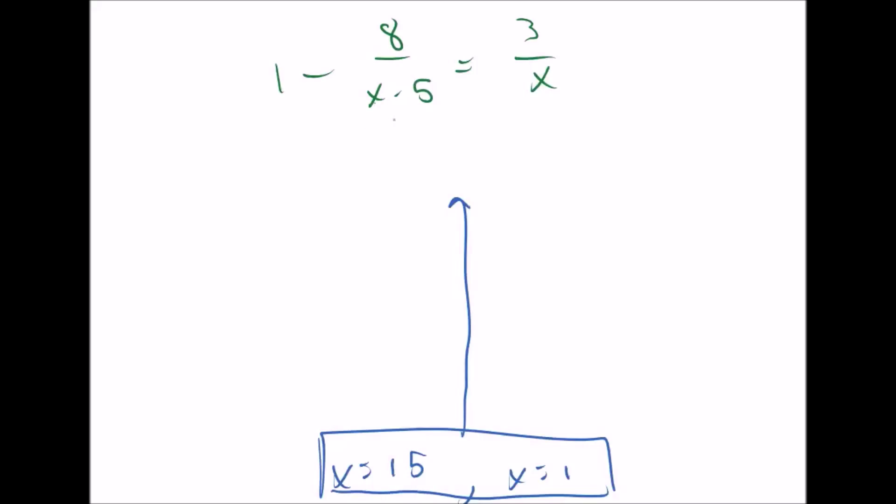So let's see. If we put in 15 here, 15 minus 5 is 10, not 0. If we plug in 15 here, it's just 15, that's not 0. So 15 is a good answer. We'll do the same thing with 1. 1 minus 5 is negative 4, that's fine. And 1 is fine. So both of those are going to be good answers.